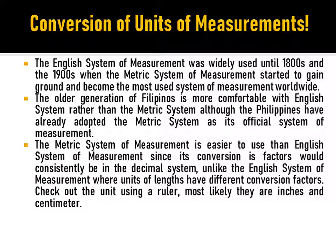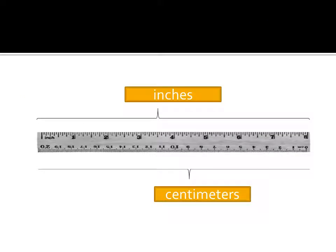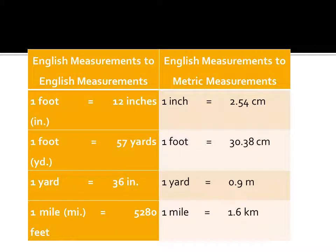Check out the units on a ruler — most likely they are inches and centimeters. Inches are used by the English system while centimeters are used by the metric system. Here is an example of a ruler: the scale above is for inches and below is for centimeters. CM is the abbreviation for centimeters.